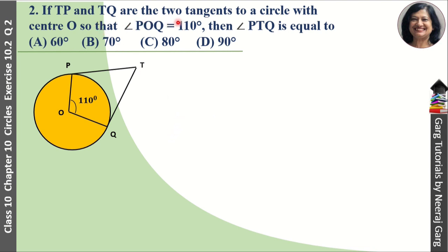If TP and TQ are two tangents to a circle with center O so that angle POQ is equal to 110 degrees, then angle PTQ is equal to: options A 60 degrees, B 70 degrees, C 80 degrees, and D 90 degrees.